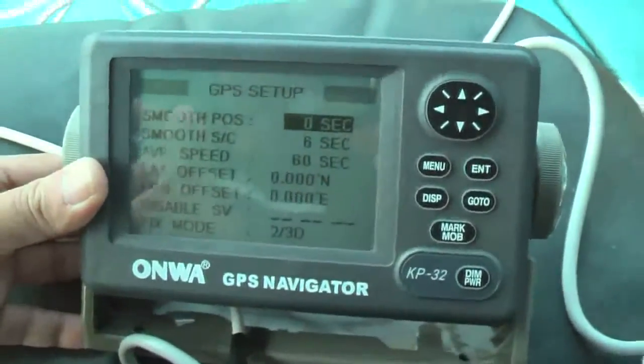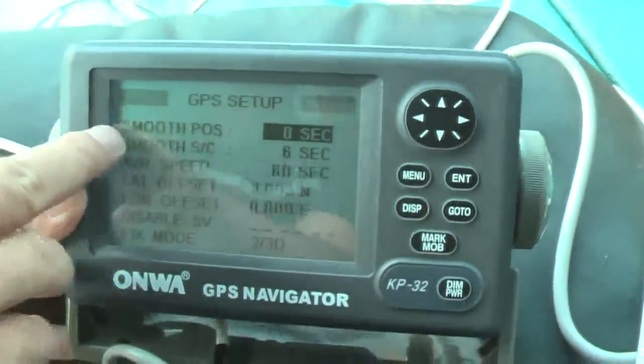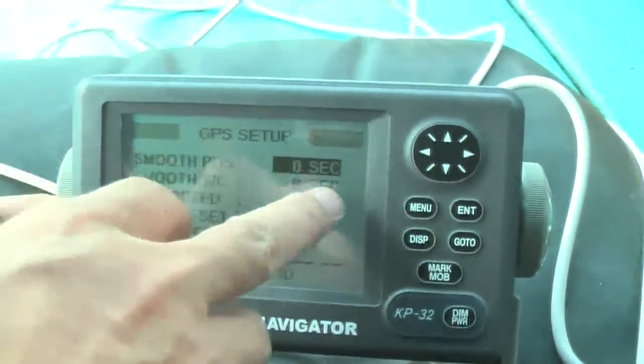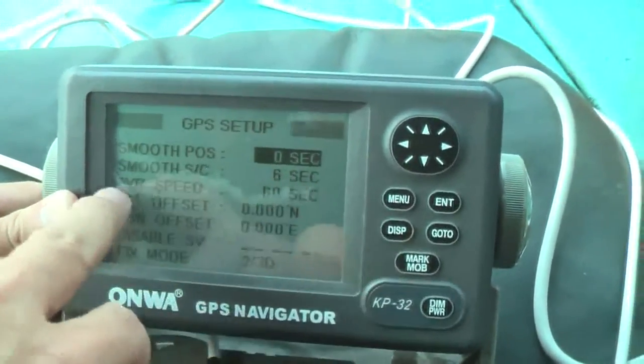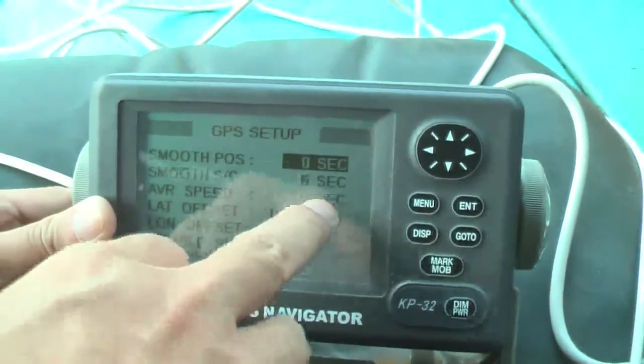The GPS setting is Smooth EOS 0 second, Smooth SE 6 second, FH speed 60 second.